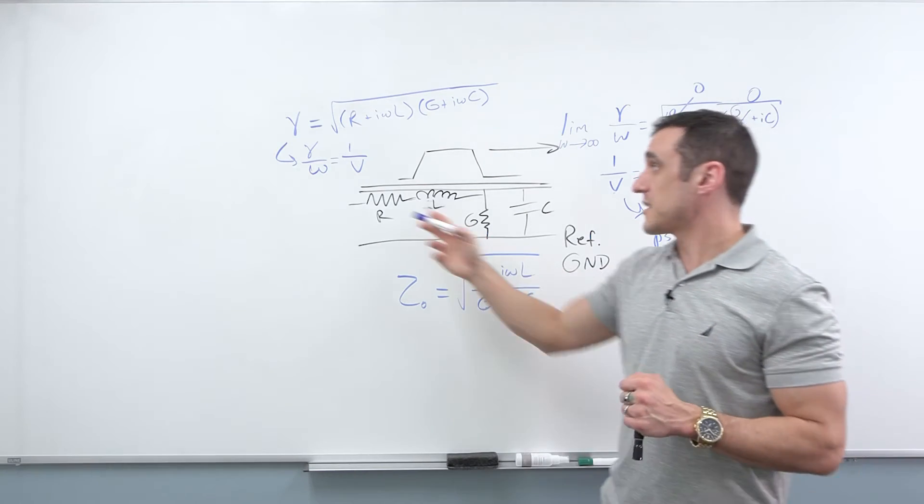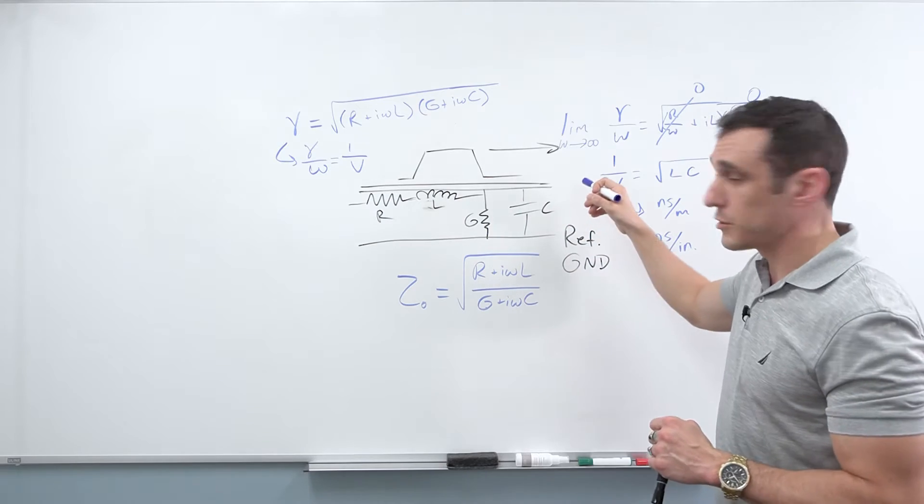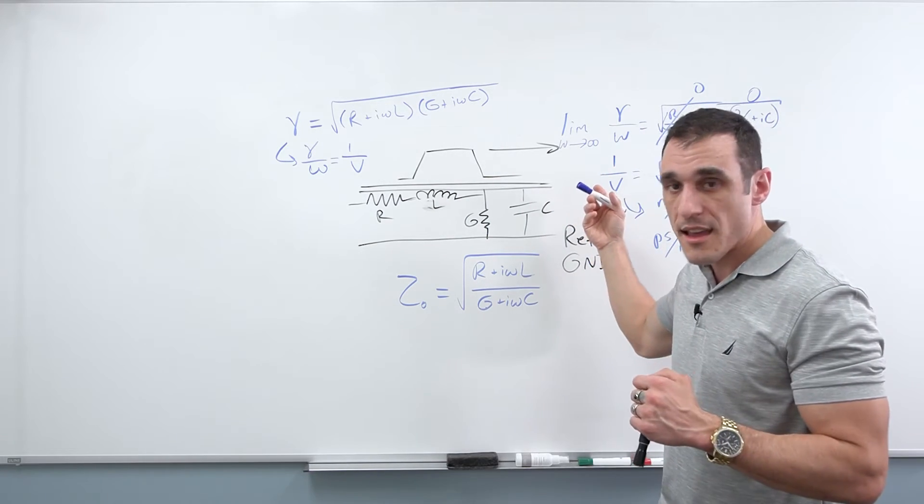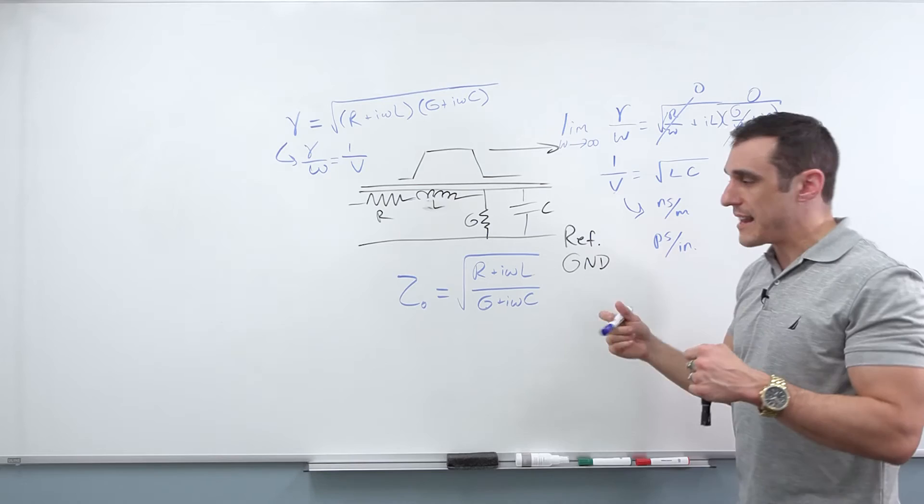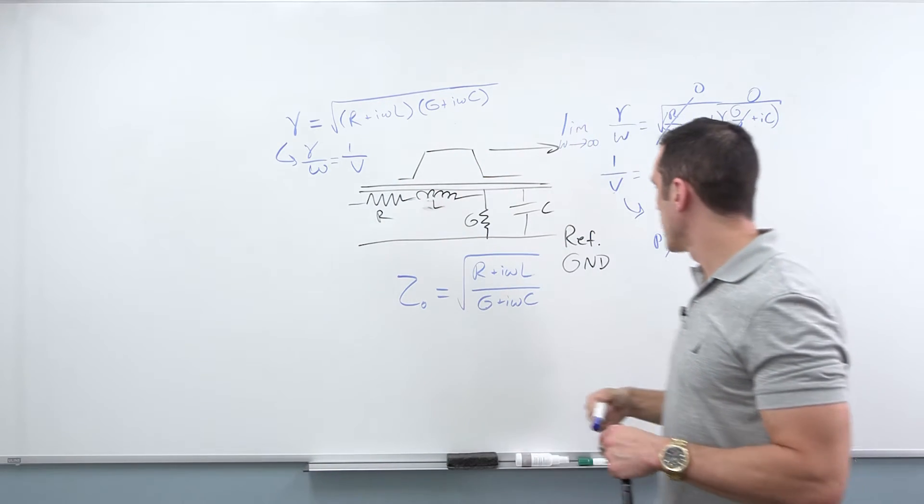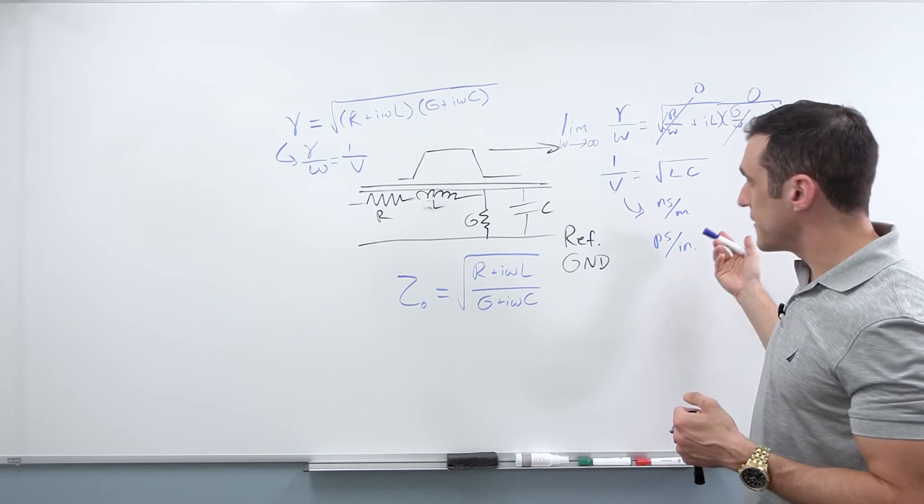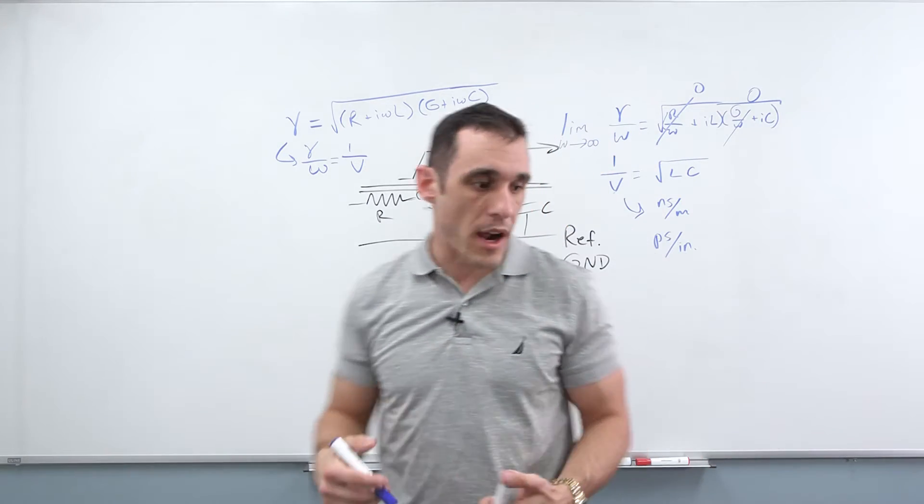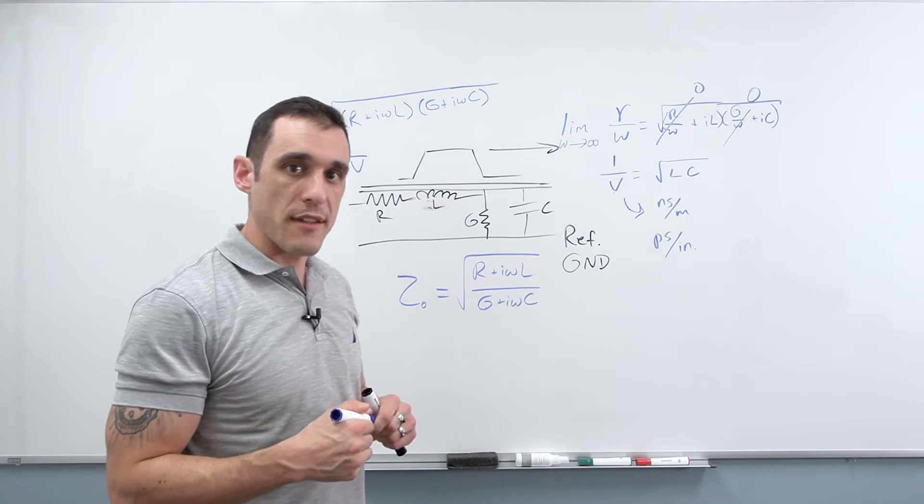So that's essentially what this means. This means that you can calculate the time required for a signal to travel along a trace with a known distance. And you can do that at any frequency you like, as long as you know the different parameters in here. And then that gives you the time that's required. And you know everything about the signal behavior.